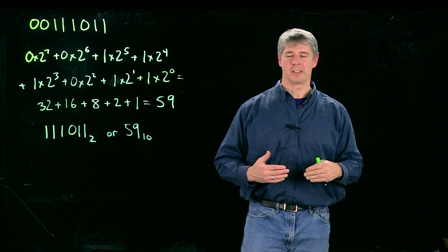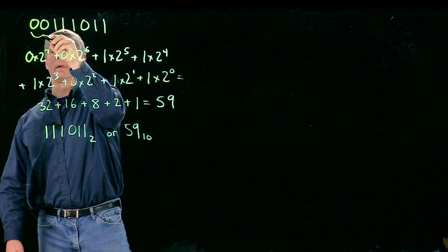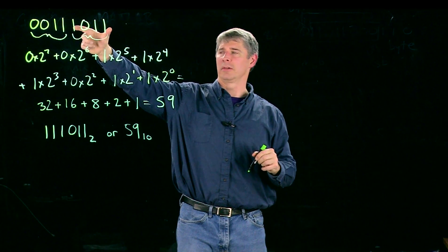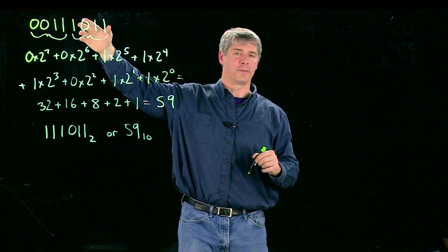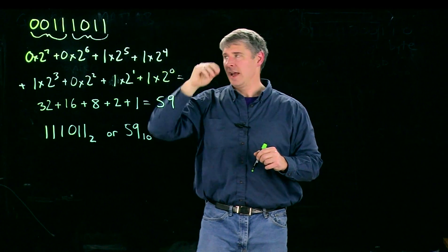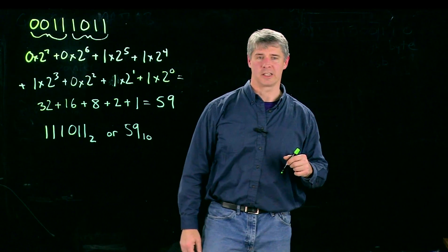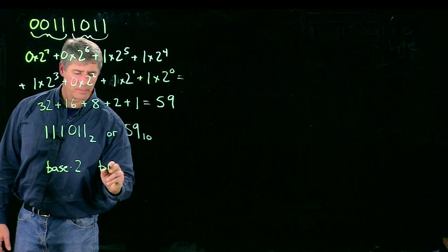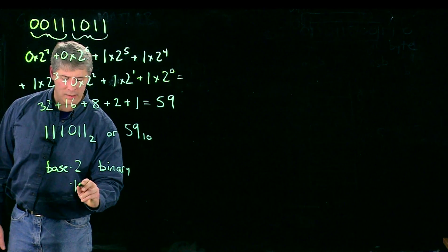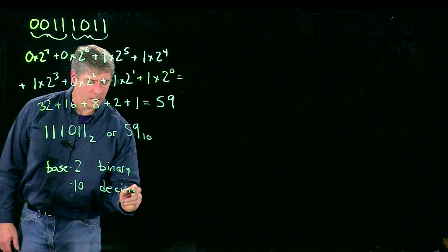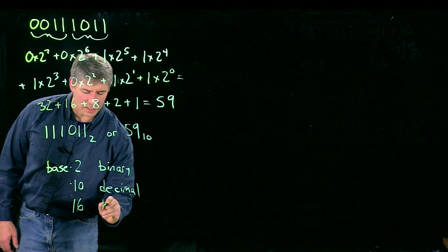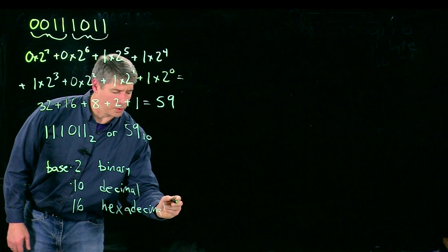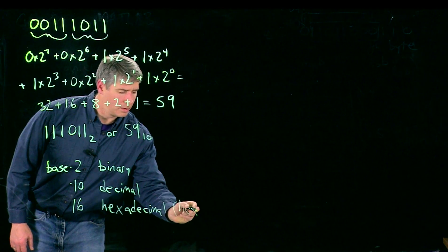So one way to get around that is to group them together in groups of 4. And instead of using only 2 values in each column, we're going to use up to 16, or 2 to the 4th, values in each column. And this new notation is base 16, or we call it hexadecimal. So we've got base 2 which is binary, base 10 which is decimal, and base 16 which is hexadecimal, or we usually say hex for short.